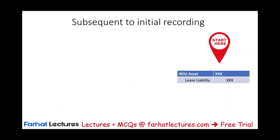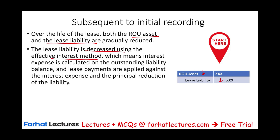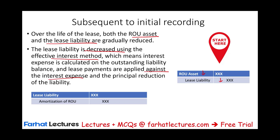We start by debiting an asset and crediting a liability. Over the life of the lease, both the asset and the liability are gradually reduced. The asset — just like property, plant, and equipment or intangibles — is depreciated or amortized. The lease liability decreases using the effective interest rate method, meaning interest expense is calculated on the outstanding liability and the lease payments are applied against both interest expense and principal reduction. The asset goes down through amortization; the liability goes down as we make payments.